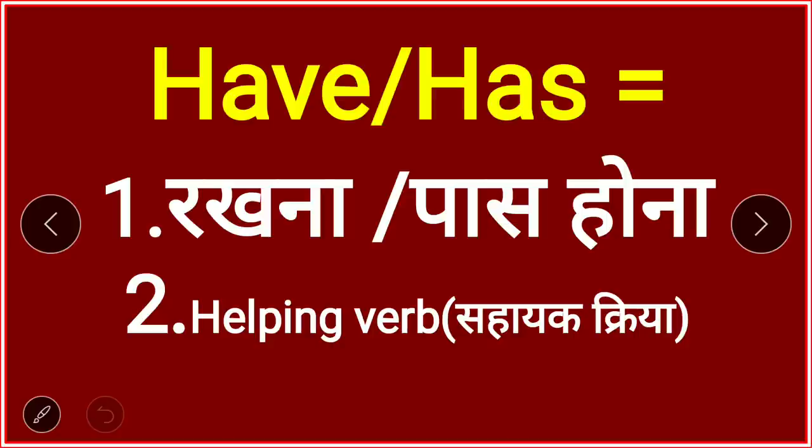Now let's understand the two uses of have and has that I mentioned at the beginning. First is 'rakhna' or 'pass hona' — we have covered all those examples. With I, you, we, they — 'have.' With he, she, it, name — 'has.' Now we move towards the helping verb (sahayak kriya / auxiliary verb).